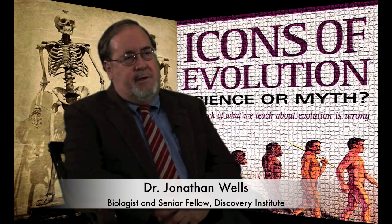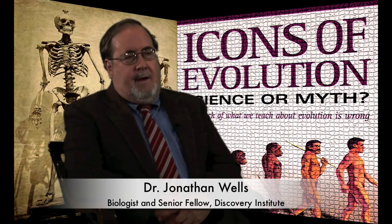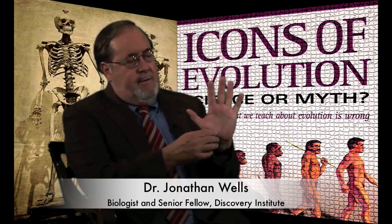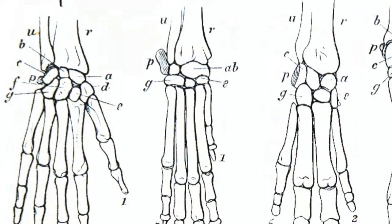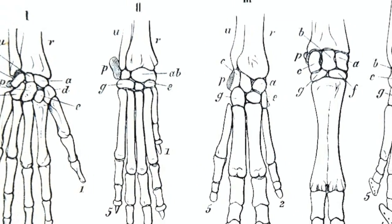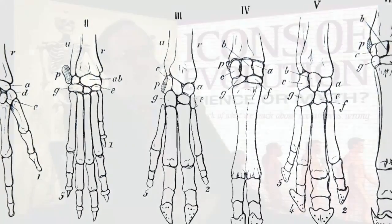The third icon of evolution is homology in vertebrate limbs. If you look at the bones in the human hand — their structure and positions — and compare that to a bat's wing or a porpoise's flipper or any number of other vertebrates, the structure and position of the bones are strikingly similar. You can sort of match them up one for one. This was recognized before Darwin by pre-Darwinian biologists and called homology.